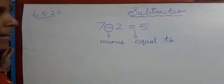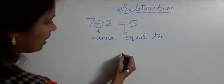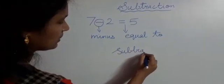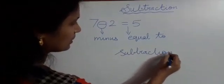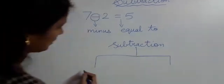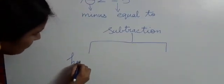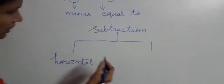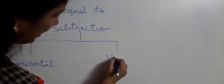There are two types of subtraction. Horizontal subtraction. Another one is vertical subtraction.